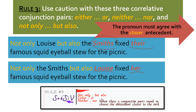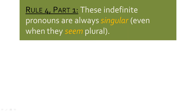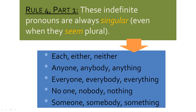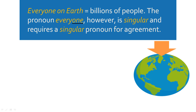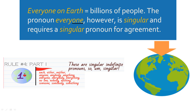Rule number four, part one: the indefinite pronouns. These are always singular, even when they seem plural. Each, either, neither, anyone, anybody, anything, everybody, everyone, nobody, someone, somebody, something — these are all singular. Everyone, representing billions of people on the whole planet, is singular and requires a singular pronoun for agreement. When these singular indefinite pronouns appear, we're going to match them with singular pronouns.